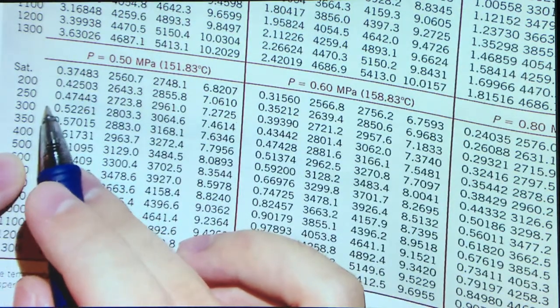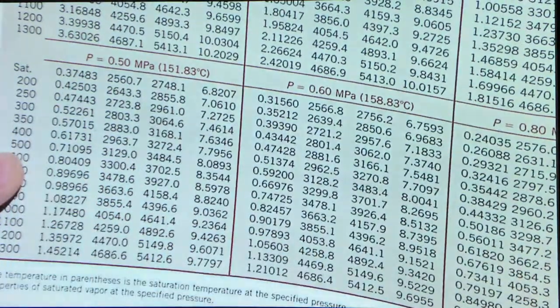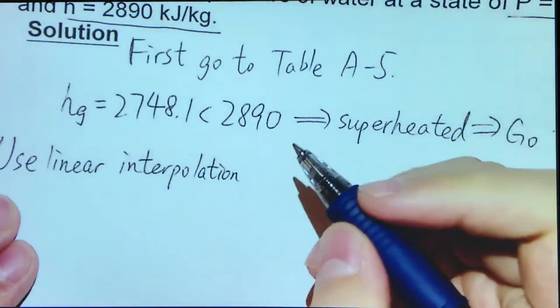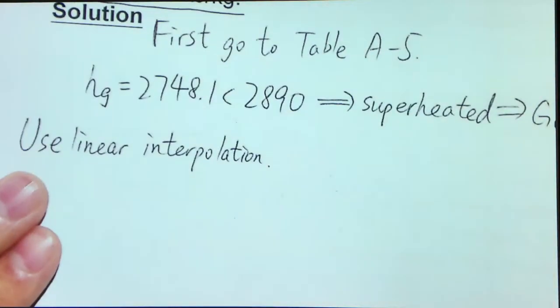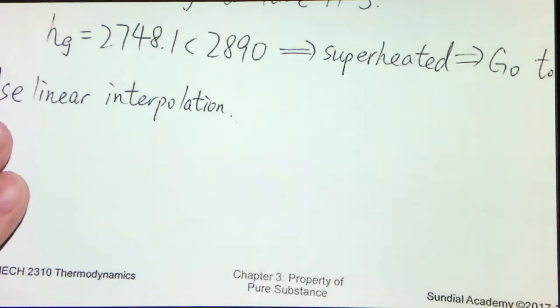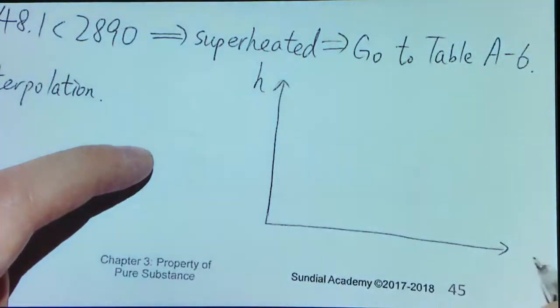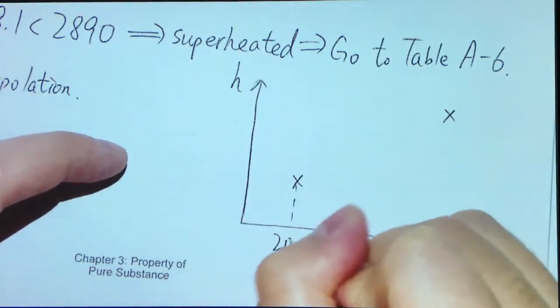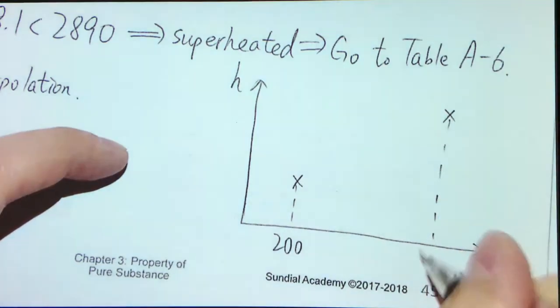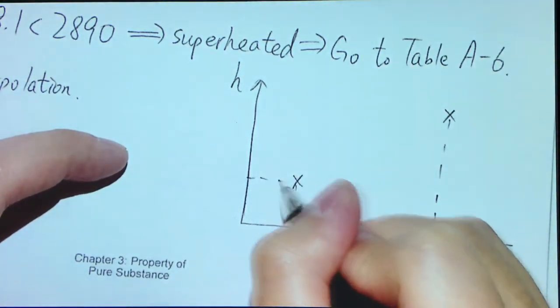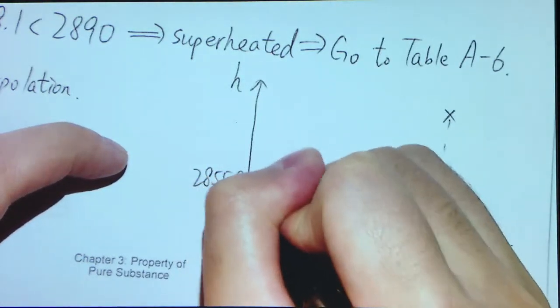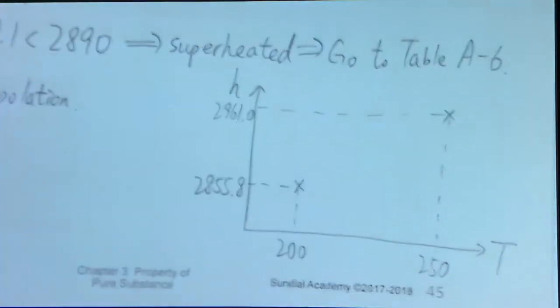But how can we find out this temperature? Again, we use what we have seen in the previous examples. We will use linear interpolation. I will show in detail how we can determine this. First, let's draw a diagram relating to our two values. Because we need to use the enthalpy value to help us find the temperature, we will draw h against T. And we have two points that are known. One is at 200 degrees C, I omit the unit, and one is 250. Their corresponding enthalpy values will be 2855.8 and 2961.0.